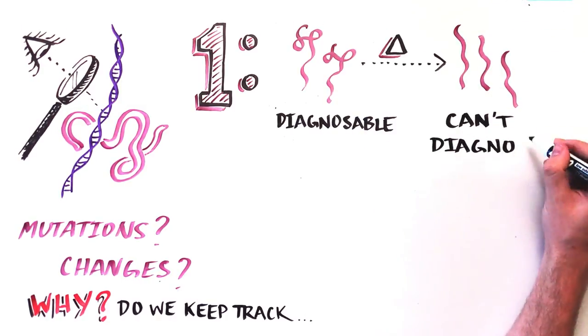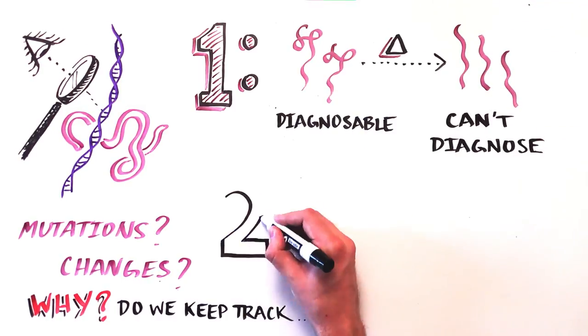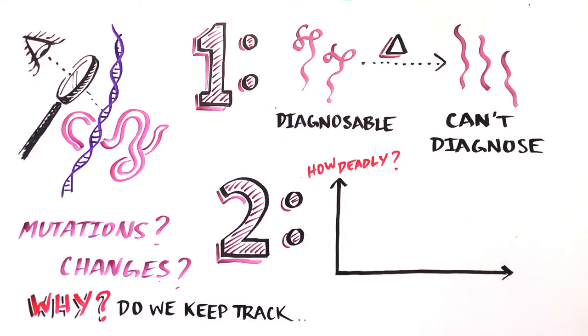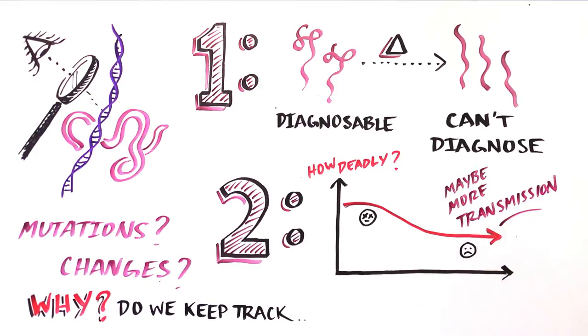We do this for a few reasons: one, we want to make sure it doesn't change so much that we can no longer diagnose an infection, and two, we want to understand if the virus is becoming more or less infectious. In fact, if the virus became less deadly, it may even spread more quickly as people will be transmitting the virus for longer.